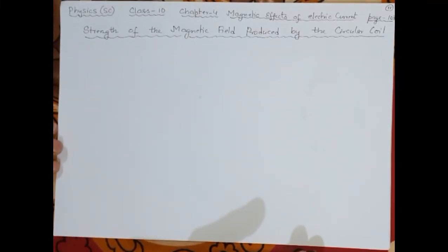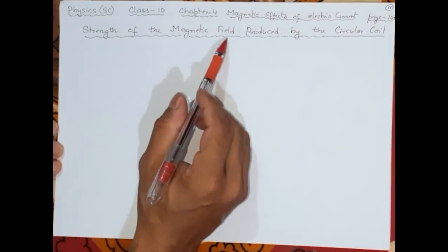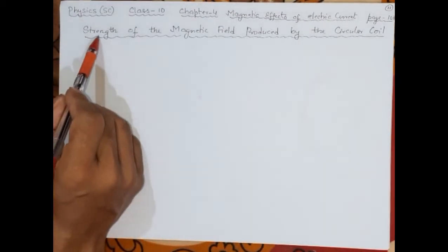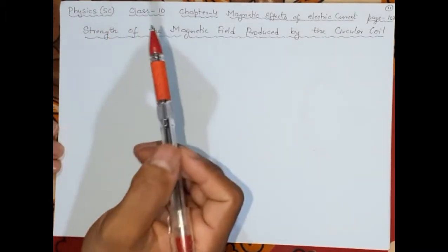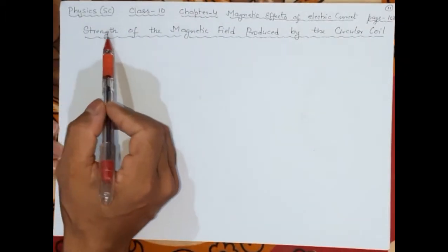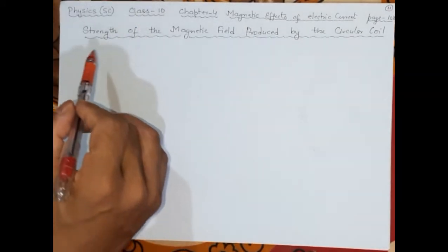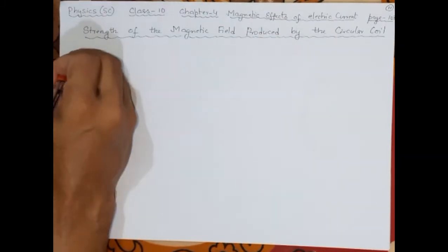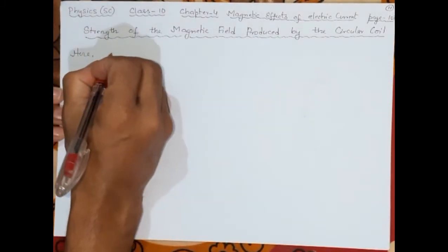Welcome back to the SD online classes. In this class we'll follow the previous one, where we studied the pattern of magnetic field produced by a circular loop — circular loop and coil are the same. Now we will try to understand how strong the magnetic field is. We're studying this because previously we found the magnetic field due to a straight conductor, and similarly here for a circular coil we are interested in the strength. The strength of the magnetic field produced by a circular coil will be much more compared to the straight conductor.